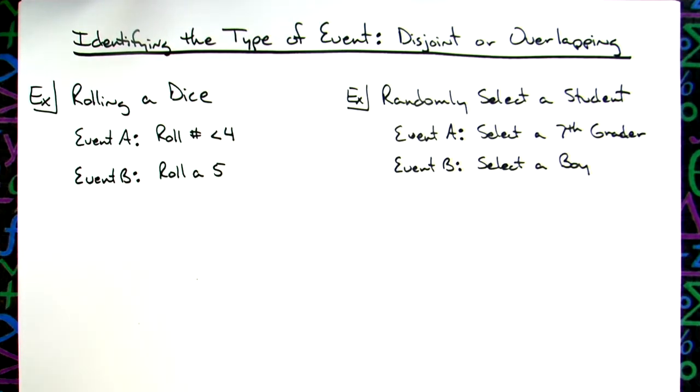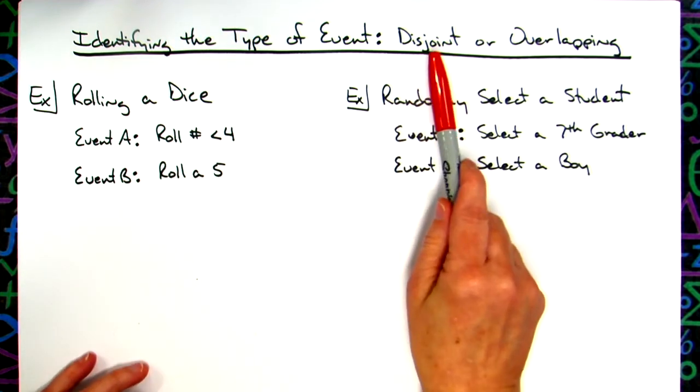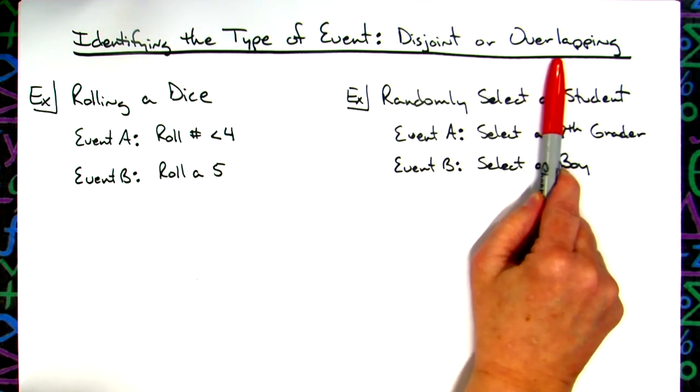In this video, we're going to take a look at two examples where we need to identify the type of event: is it a disjoint event or is it an overlapping event?